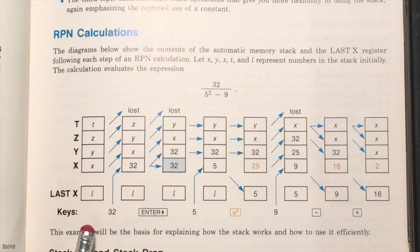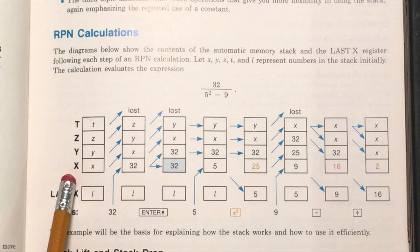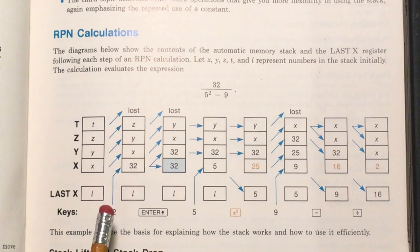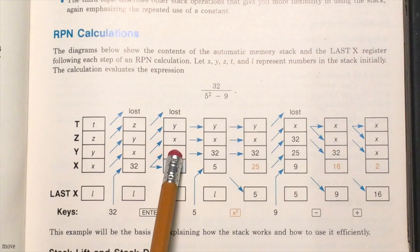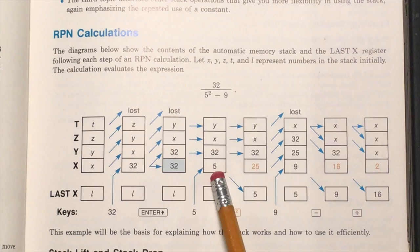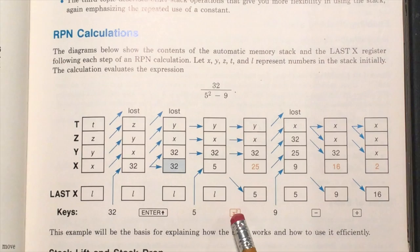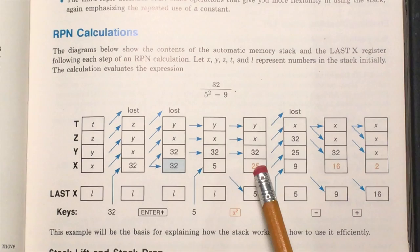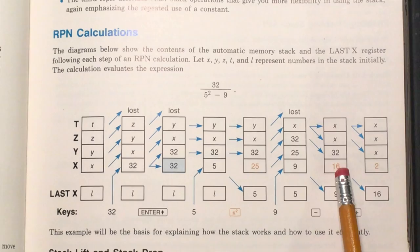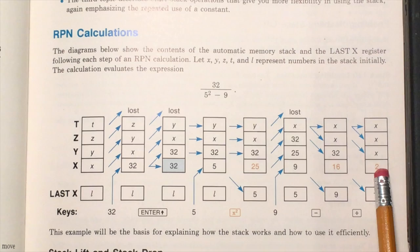To do this calculation, you type in 32, and that goes into the X register. The X register is what's displayed on the calculator screen. When you do enter, that pushes the stack up, so that pushes 32 into the Y register. Then you enter the next part of the equation, which is 5, so that goes into the X register. Then you do the squared function, which puts the result of 5 squared into the X register. Then you enter 9 and then minus, which puts the result in the X register. Then you do divide, and that puts the result into the X register.